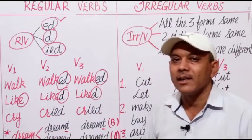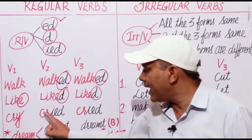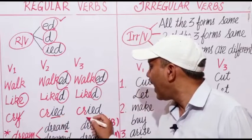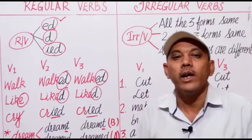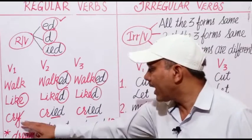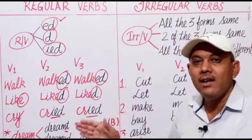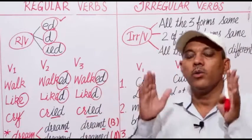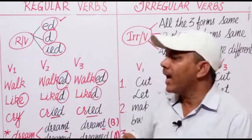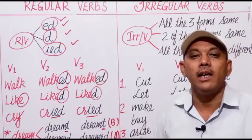Next is 'cry'. It ends in y preceded by a consonant r. We shall remove this y and add -ied to it to change its other two forms: cry, cried, cried. In this way, we can say that all regular verbs end in -ed, -d, or -ied form.